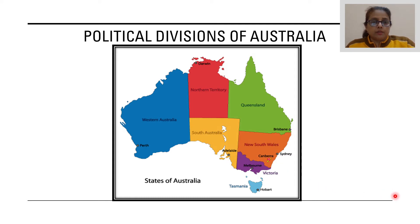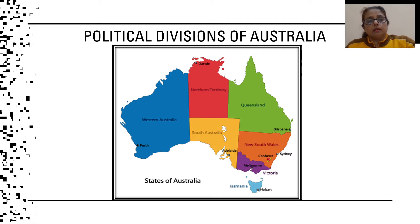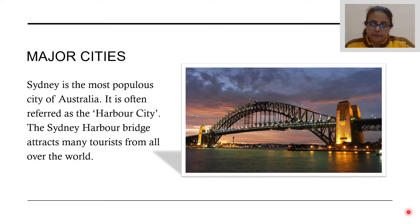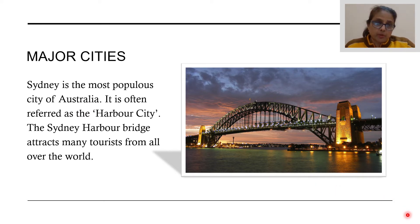We can see how Australia is politically divided into several states. There are several important cities in Australia. The most important city is Sydney. Sydney lies on the eastern coast of Australia and it is the most populous city of the country. It is often referred to as the Harbour City.